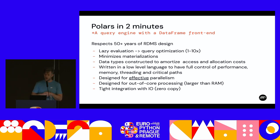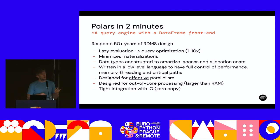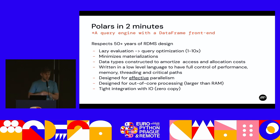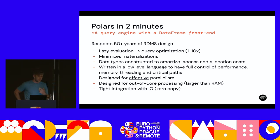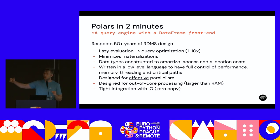And with that we can improve performance by one to ten times, depending on the query and how much we can optimize. We minimize materializations — we try really hard to not construct full intermediate data frames. For instance, if you take a Pandas data frame and you multiply first two columns and then you only select the last 100 rows of that, you also multiply the whole data frame. We can realize that we only need to multiply the last 100 rows.